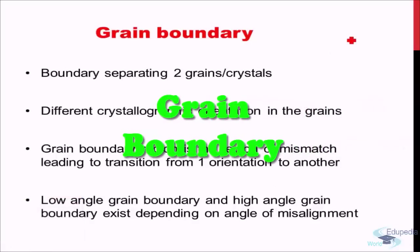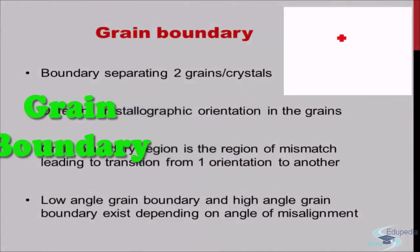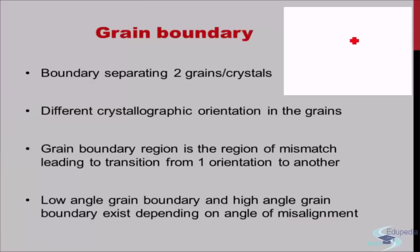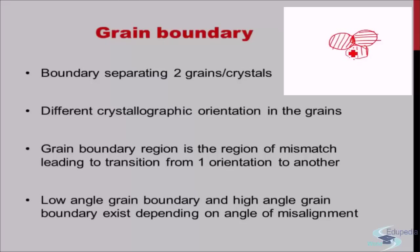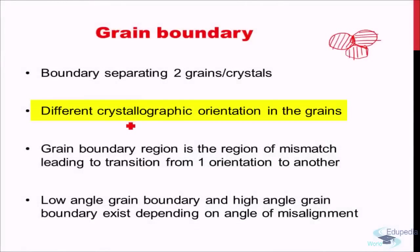Any crystalline material is composed of many grains, each with a particular crystallographic orientation. The boundary where the change of crystallographic orientation takes place is known as the grain boundary. Between adjoining grains there is a change in crystallographic orientation. Grain boundaries are basically regions separating two different grains or crystals, where different crystallographic orientations are present.